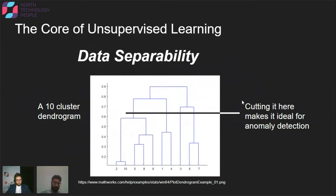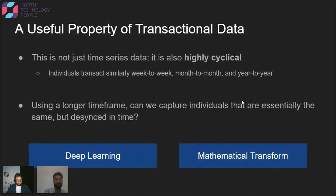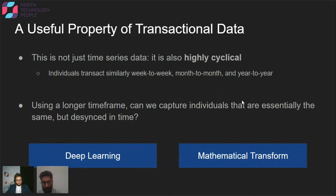I really zeroed in on unsupervised learning as the topic I focus on within machine learning. What I really want to talk about today is a specific technique that I found very useful because of the nature of the data I'm working with. A useful property of transactional data is it's not just time series data — it's actually cyclical time series data. People have fixed transactions week to week, month to month, year to year.